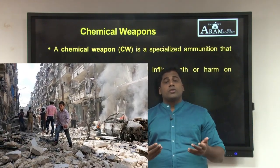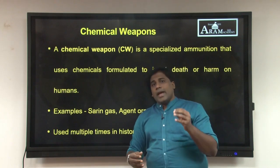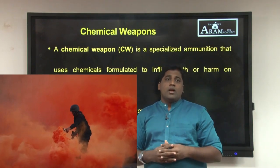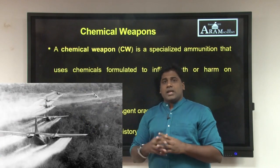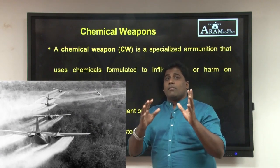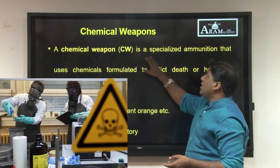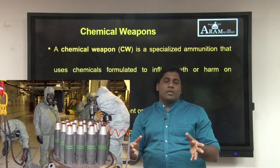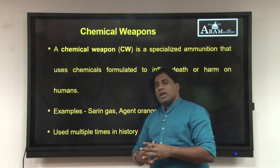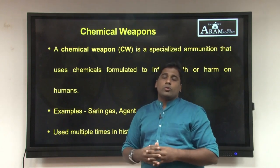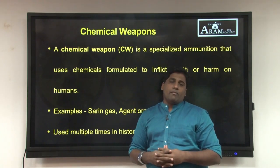The Syrian President used sarin gas. Another type of chemical weapon is Agent Orange, which was used by the USA in the Vietnam War. We can understand that biological weapons come from viruses and bacteria, whereas chemical weapons are chemicals specially designed to cause huge damage to humans. This particular weapon has been used multiple times in known history, and the recent one is sarin gas — that is the second weapon of mass destruction.